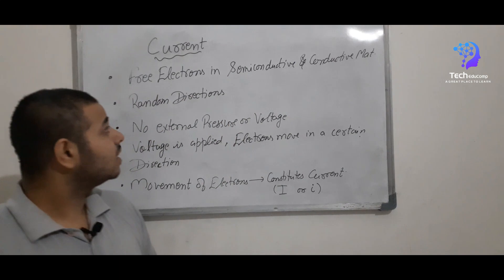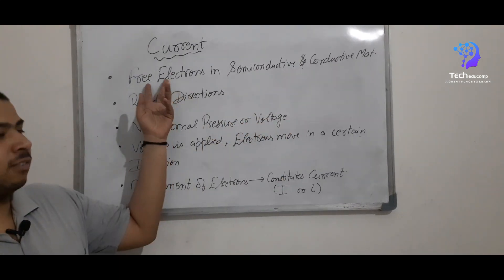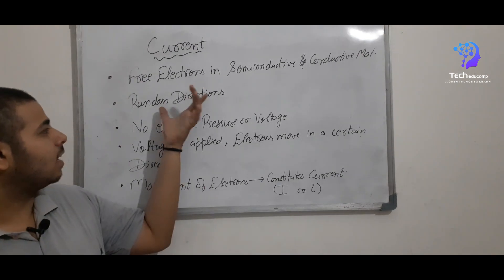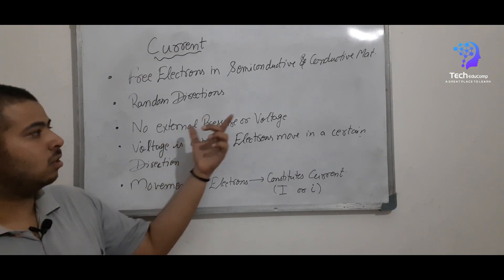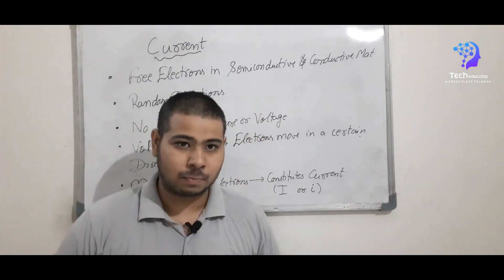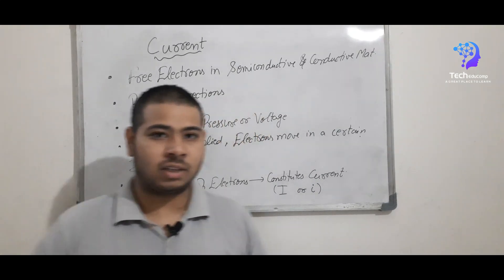So in a semi-conductive or conductive material, there are some free electrons which move at a random direction at a random speed without any external pressure or voltage applied to it.